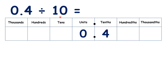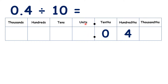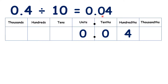When we divide by 10, the digits move one place to the right. So we have 0.4 on our place value chart. If we move the digits one place to the right, we now have 0.04. But we always need a digit in our units column, so if it's empty, we always write in 0. So our answer is 0.04.